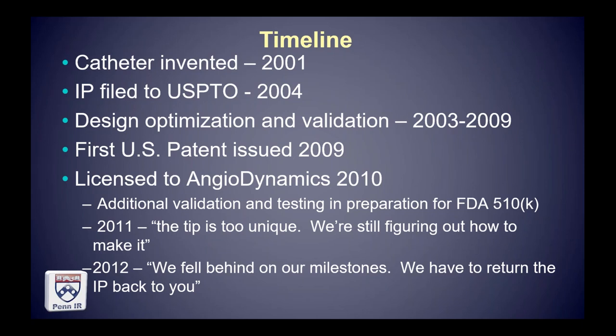Because the tip was so different — when you make a hemodialysis catheter it's basically a double-D extruded polyurethane tube that is cut, with holes skived on the side by tool stamping or laser skiving — they found that the tip of the vector flow catheter was too unique. After a year from the licensure agreement they were still trying to figure out how to make it, and then came back saying they'd reached an impasse, fallen behind on milestones, and would have to return the IP back to me.